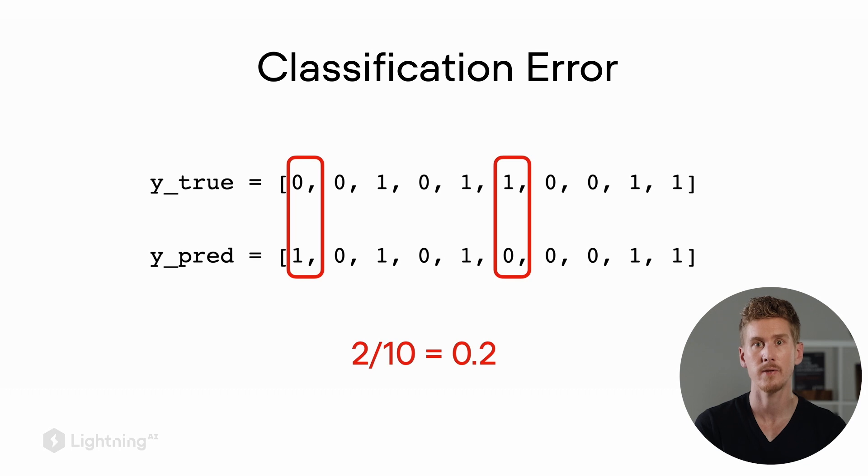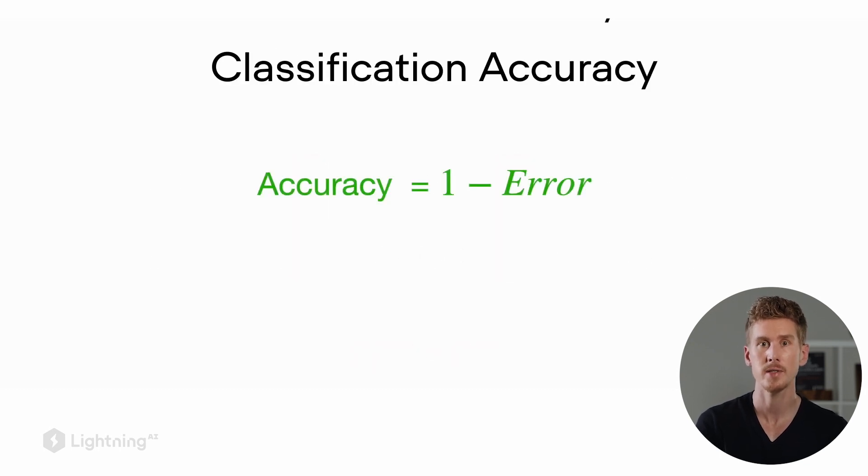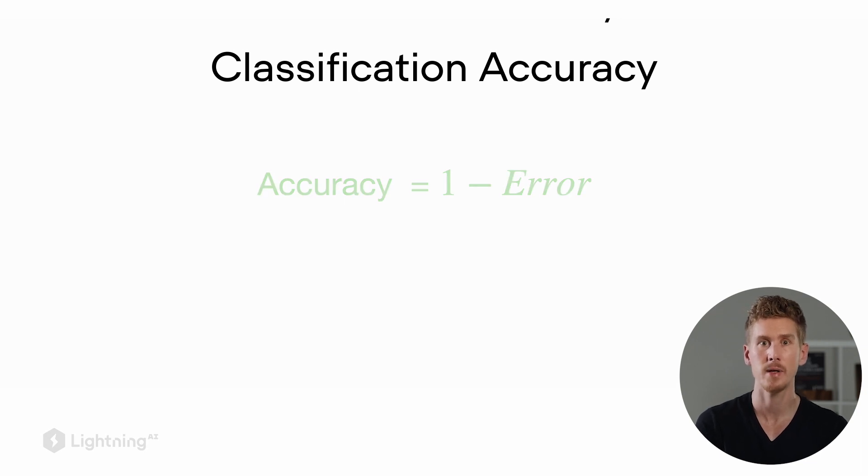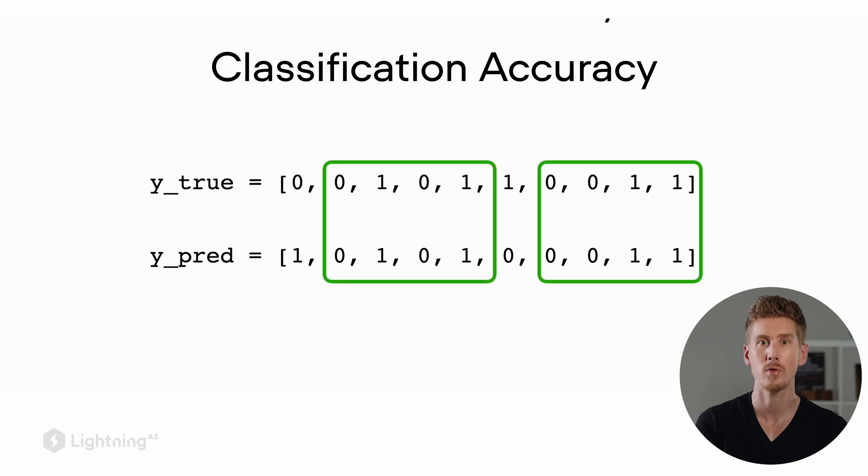Now the classification error and the classification accuracy are actually closely related. In fact, the accuracy is just 1 minus the error. So again, looking at the same example as before, we can also quantify the number of correct predictions. In this case, we have 8 out of 10 correct predictions. So our accuracy is 0.8.